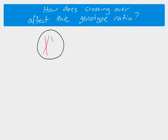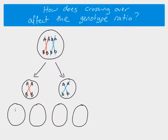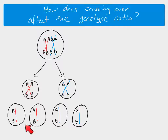So if we just do a very quick recap and think about what will be happening here. We've got a homologous pair. One chromosome has the two dominant alleles at the gene loci for A and B, and the other has the recessive alleles at the gene loci for A and B. We end up showing how we get our gametes, and these two gametes would have the same combination of alleles: big A, big B, and little A, little B. So these are linked genes.